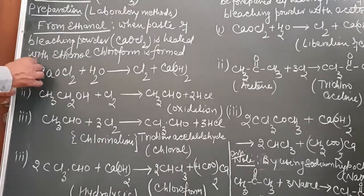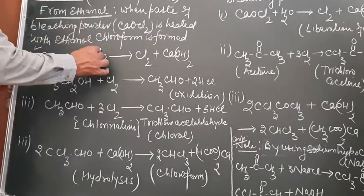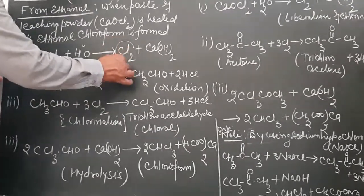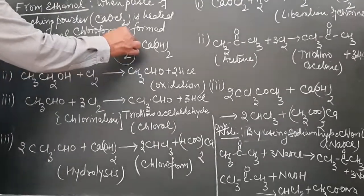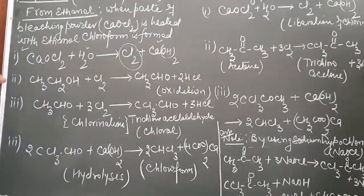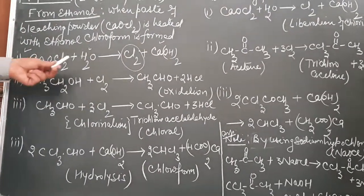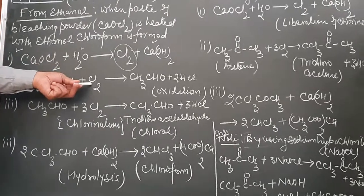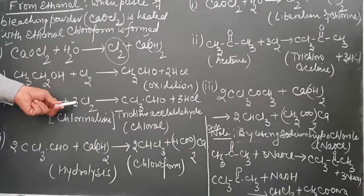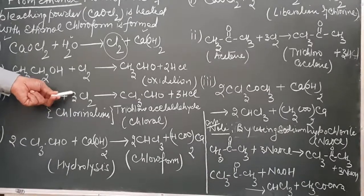In the first step, this bleaching powder, when dissolved in water, will liberate the gas chlorine along with calcium hydroxide. This liberated chlorine will act as an oxidizing agent as well as a chlorinating agent.